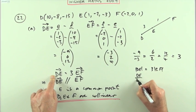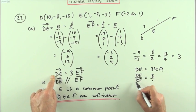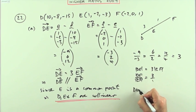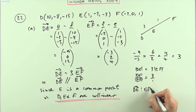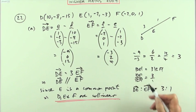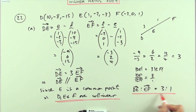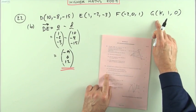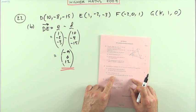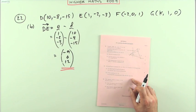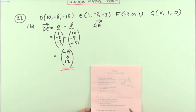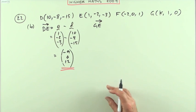If DE is three times EF, then DE over EF must be 3 over 1. That would be the ratio because that's the rational number. So I could say DE to EF is 3 to 1. Either way, it would just be a simple statement. Part B then: G has coordinates (k, 1, 0). Given that DE is perpendicular to GE, find the value of k.